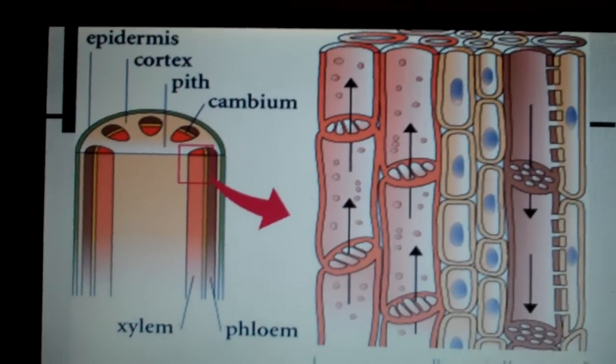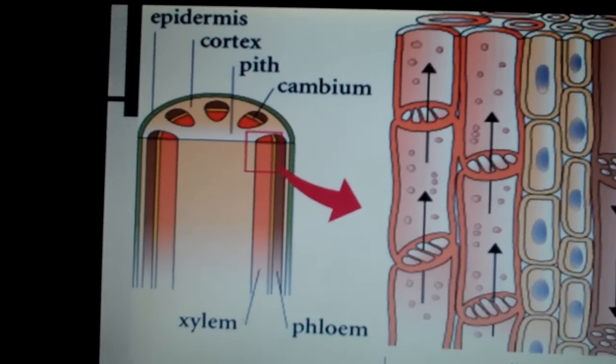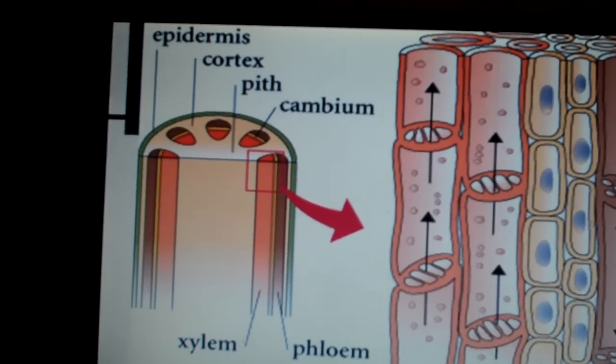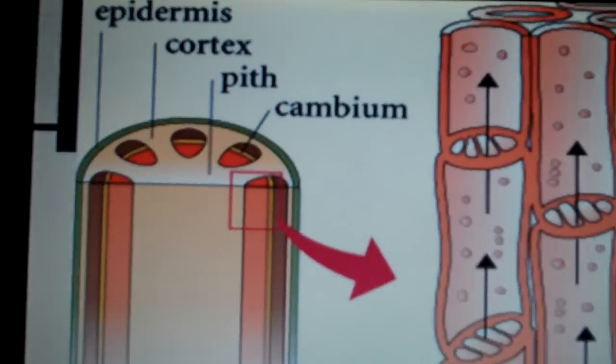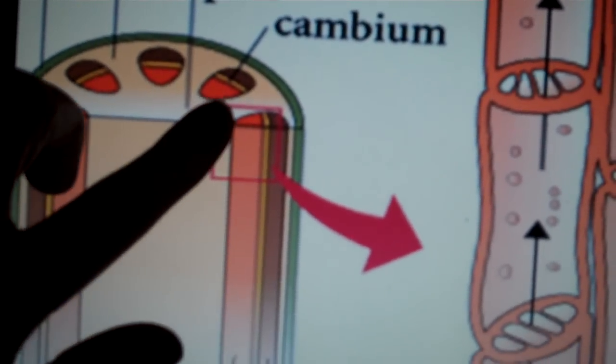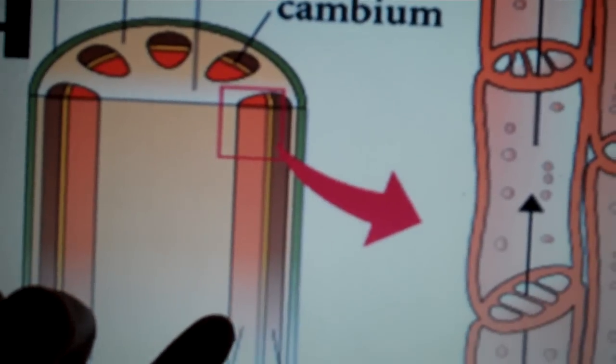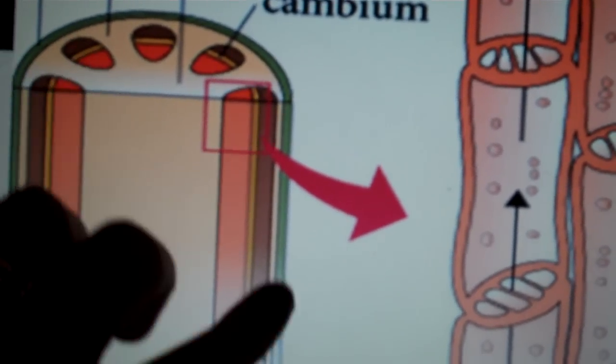As we recall, the vascular tissue is made up of xylem and phloem, divided by a cambium or the vascular cambium. In a vascular bundle, we have the xylem, which is this inner part in orange, and then we have the phloem in the brown.